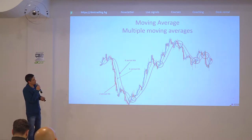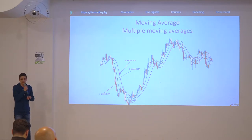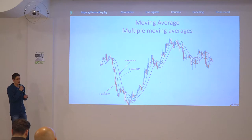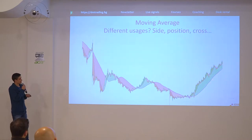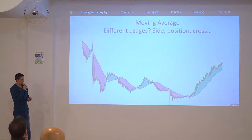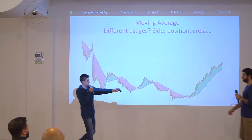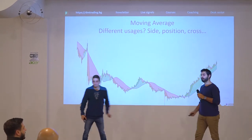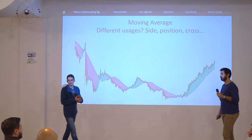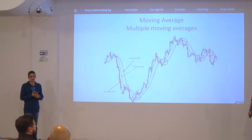Any questions about multiple moving averages or the 200 moving average? Or we can continue with a bit of a different usage — Pascal will tell you a few things about that, and we will continue with the next indicator after that.